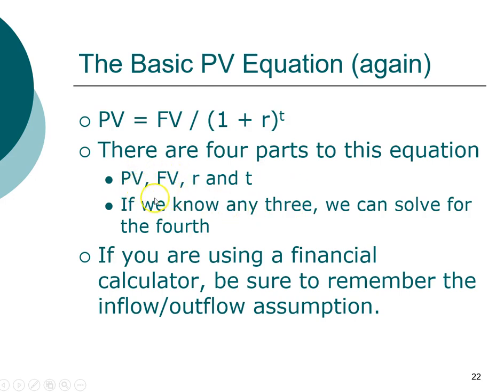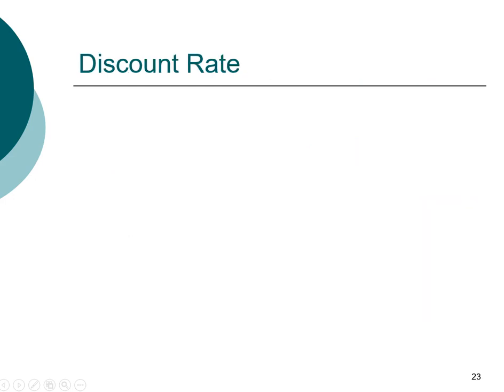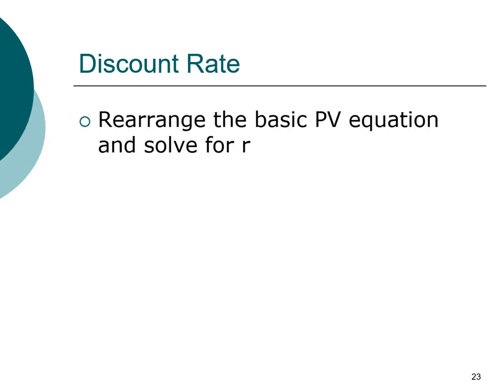We already went over how to compute future value and present value. Next, we're going to look at the interest rate. Remember that the interest rate has many different names — we're going to solve for it, and it is also called the discount rate. We can rearrange the present value formula to solve for the discount rate. The original formula is: future value equals present value times one plus the discount rate raised to the time period.